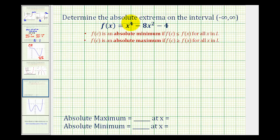We need to determine the absolute extrema on the open interval from negative infinity to positive infinity of the given function. When determining absolute extrema on an open interval, it is different than on a closed interval. When the interval is closed, we test the function value at the endpoints as well as the critical numbers. But if the interval is open, we can't test the function values at the endpoints, so we'll determine the function values at the critical numbers and also analyze the end behavior of the function.